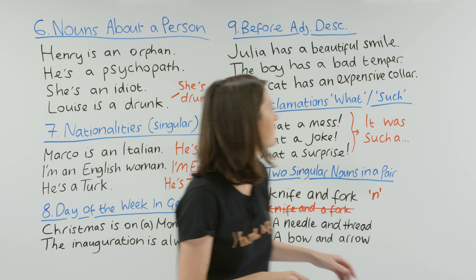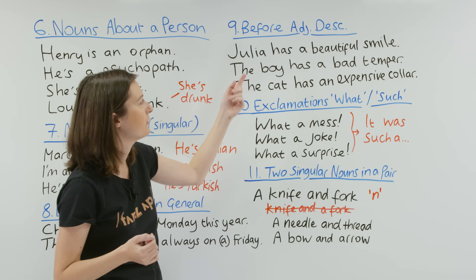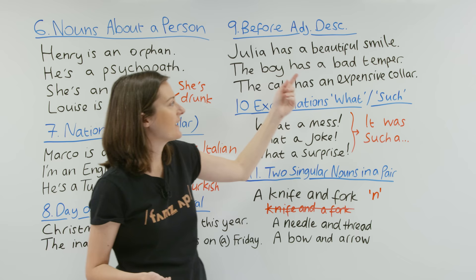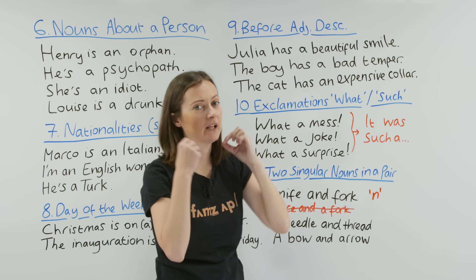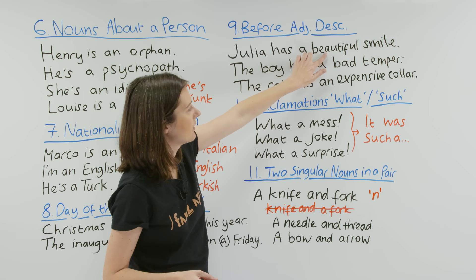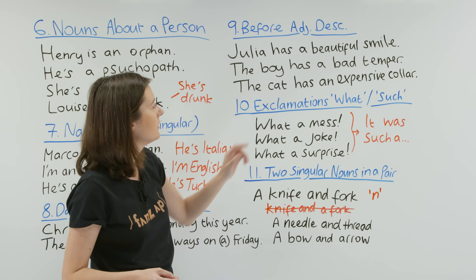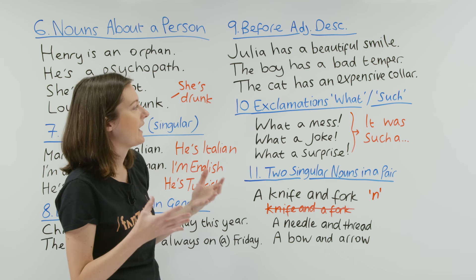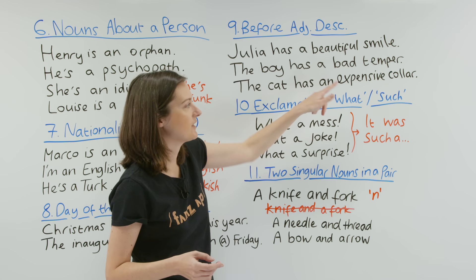Number nine: we use 'a' or 'an' before an adjective in a description. 'Julia has a beautiful smile.' 'The boy has a bad temper.' 'The cat has an expensive collar.' In these sentences, the adjectives — beautiful, bad, and expensive — come after 'a' or 'an'. To decide whether to use 'a' or 'an', it depends on the first sound of the adjective.